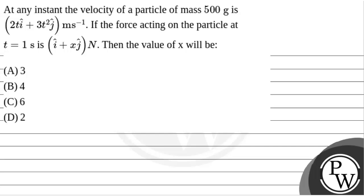Hello Achoo, let's read the question. The question says that at any instant the velocity of a particle of mass 500 gram is 2t i cap plus 3t square j cap meter per second. If the force acting on the particle at t equals 1 second is i cap plus x j cap newton, then the value of x will be.